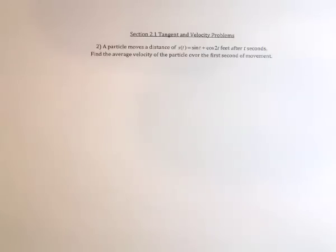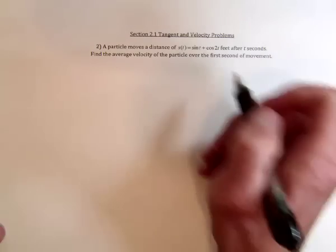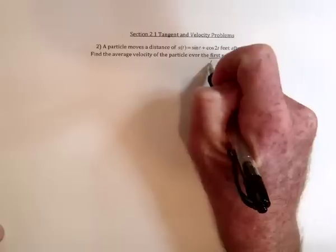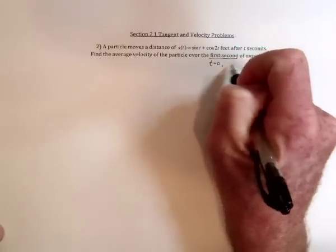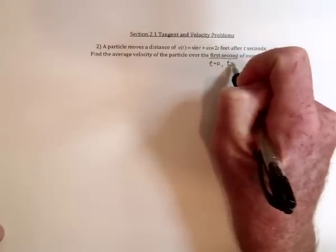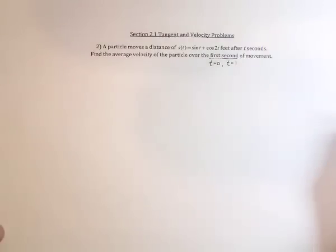So to find average velocity we need two times. This is just saying over the first second of movement. So that actually means go from the beginning when time was equal to zero to when time is equal to one.